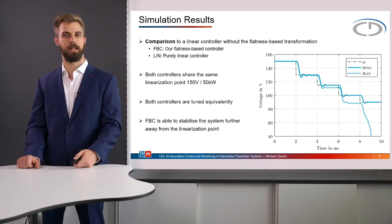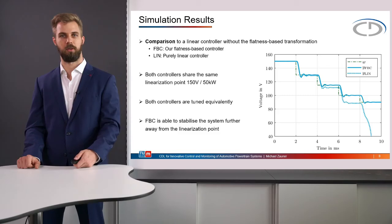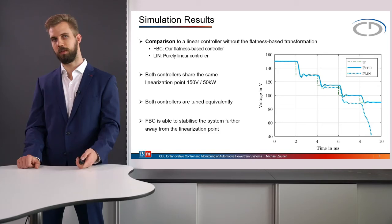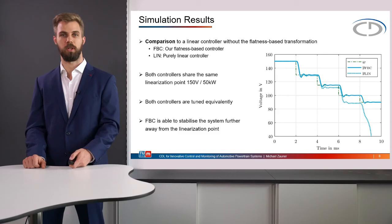On the other hand, this purely linear controller starts to develop an offset and the tracking performance gets worse and worse until at some point the voltage collapses to zero. Both controllers are of course tuned equivalently to enable a fair comparison. This conclusion tells us that our flatness-based control concept is able to stabilize the system further away from its linearization point than a purely linear implementation.